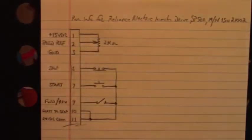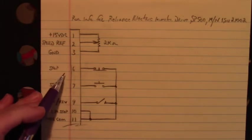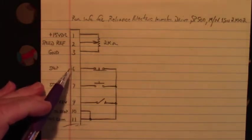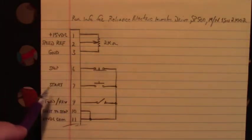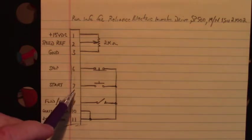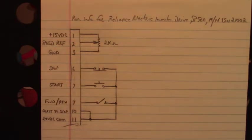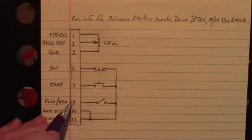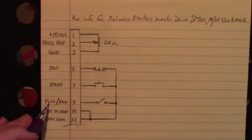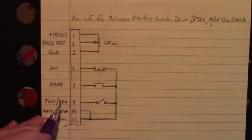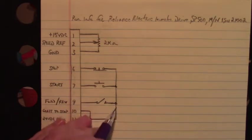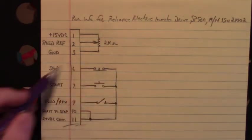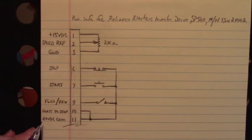Now down here on terminal 6 we have the stop input. Terminal 7 we have the start input. Terminal 9 we have forward when this switch is open. Reverse when the switch is closed. And all of this connected to 24 volts DC common.